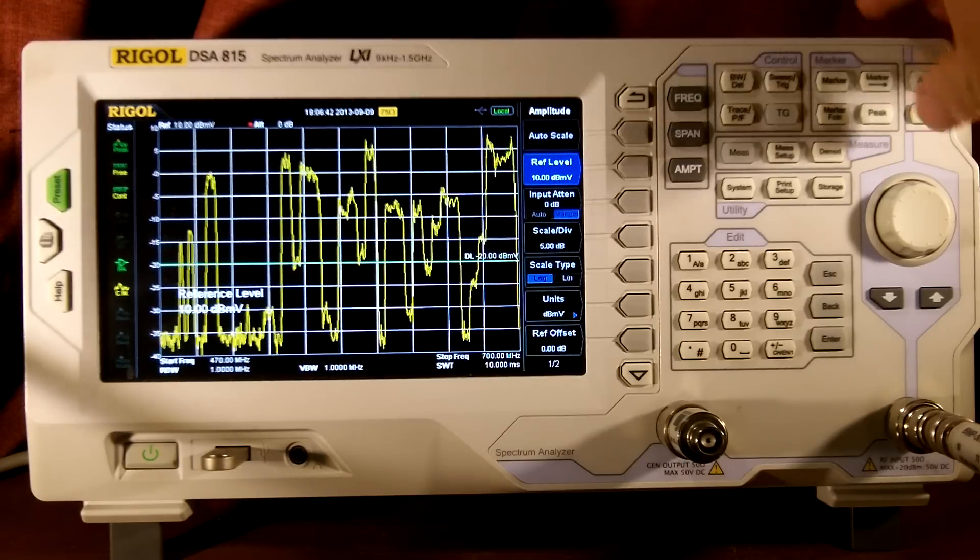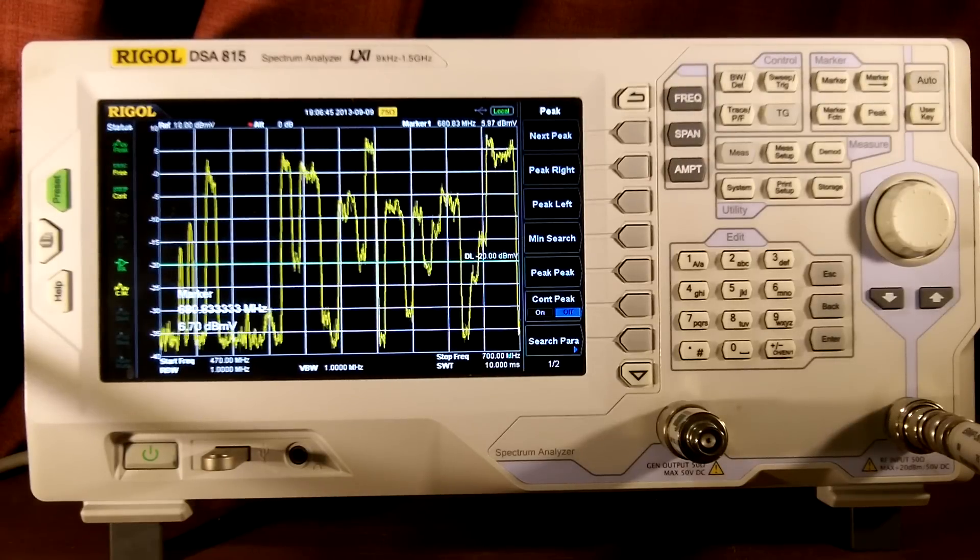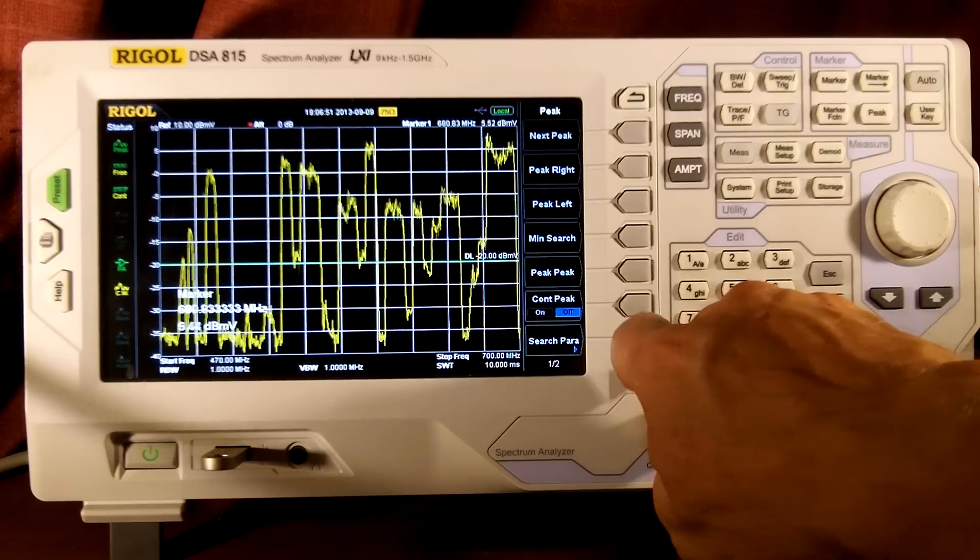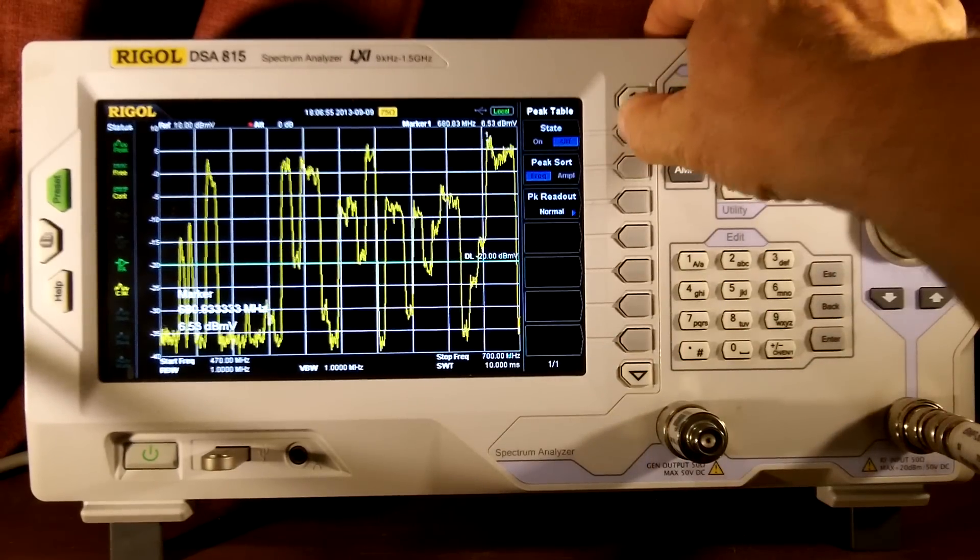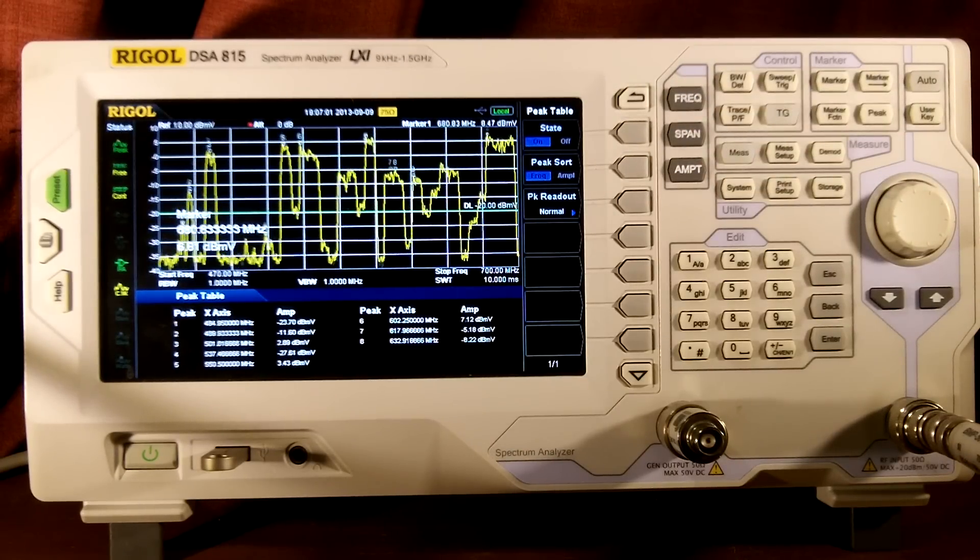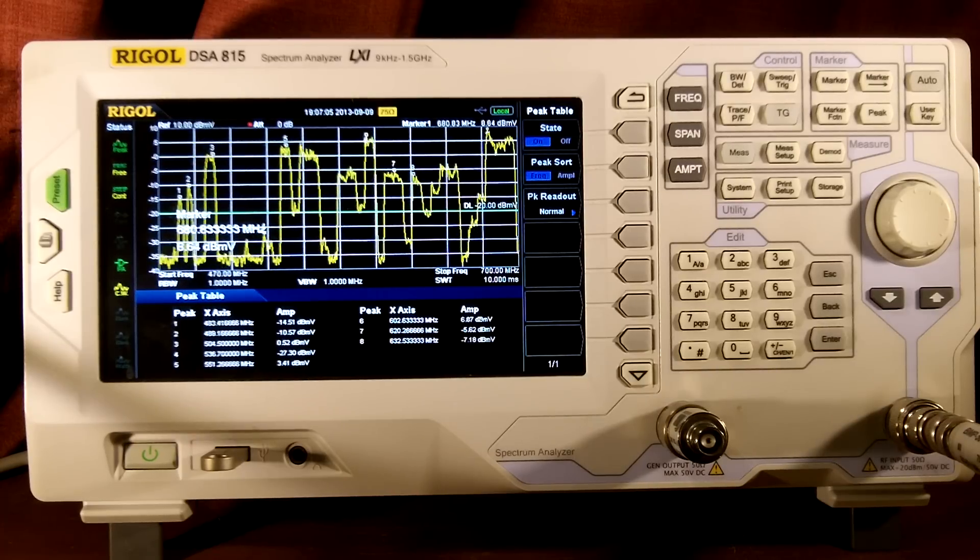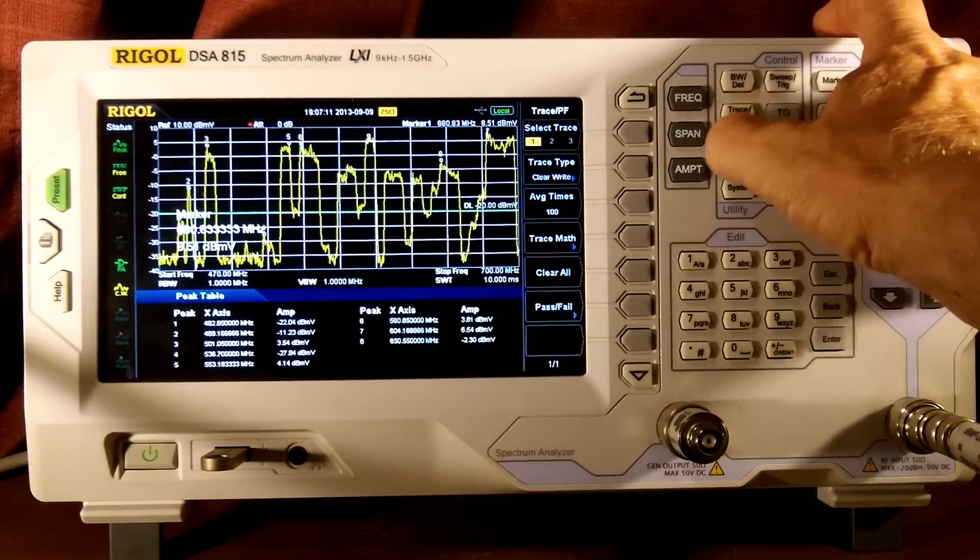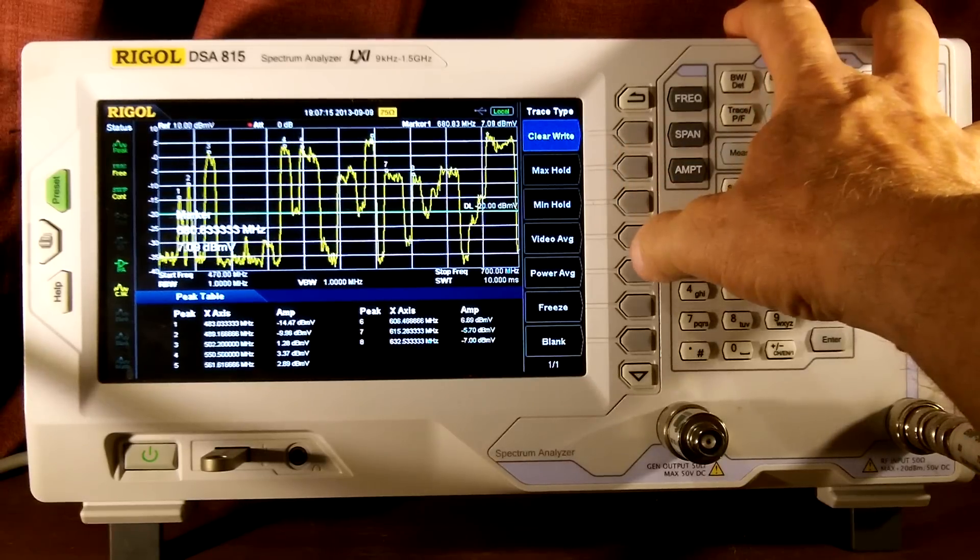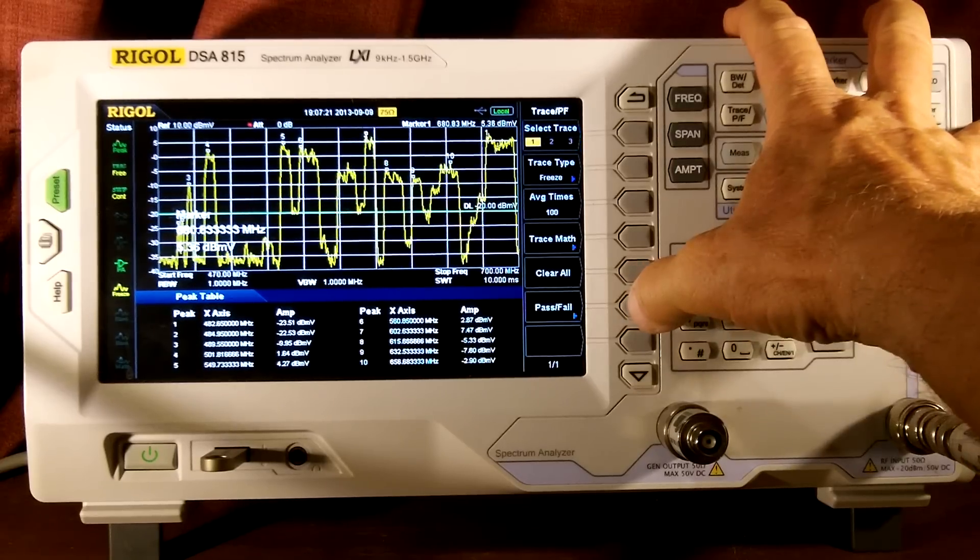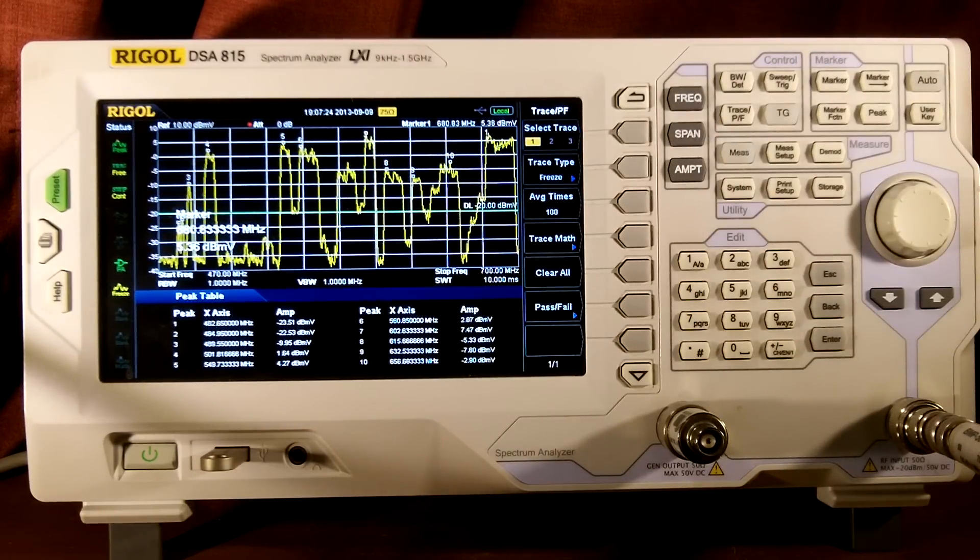What we can do is we can hit peak here. And we can do on screen 2 here, a peak table, and turn it on. And there's all the frequencies that we're receiving. So, I'm going to stop that. So, what I'll do is I'll hit trace and I'll hit freeze at some point when I've got all 10 or 9. There we go. I got all 10. So, there's our frequencies and there's what levels they are.